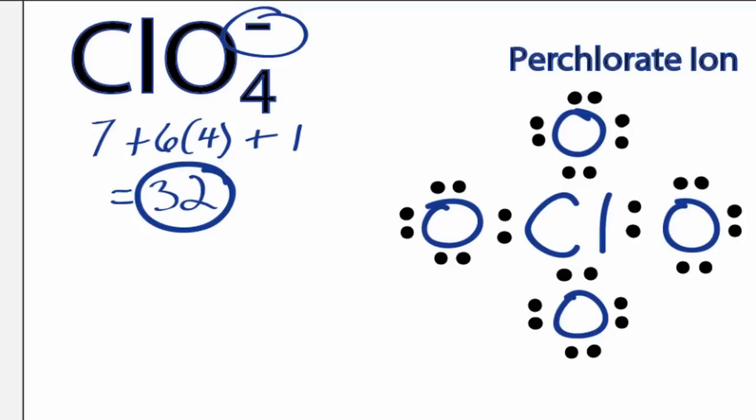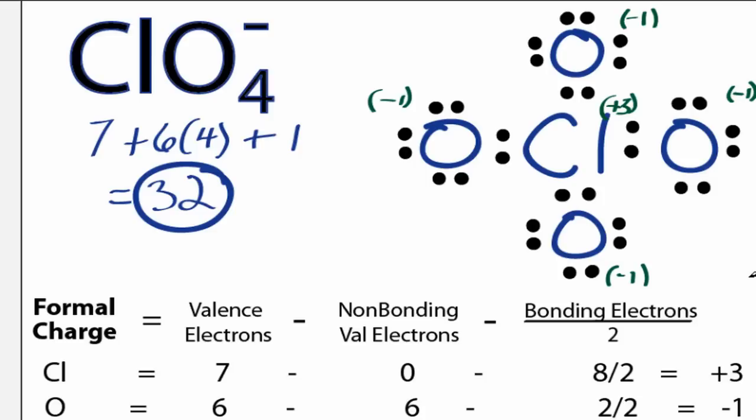At this point everything has octets, but since chlorine's in period 3 of the periodic table, we should check our formal charges, because it can hold more than 8 valence electrons. When we calculate the formal charges, we can see that the chlorine has a plus 3, and the oxygens have a minus 1.